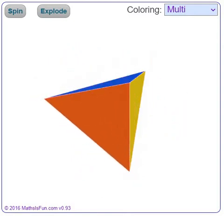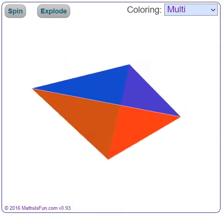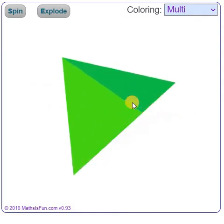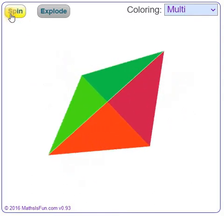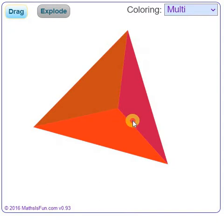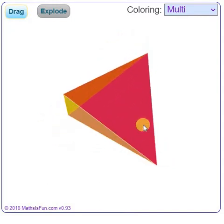When you hit the link, you will arrive at the spinning tetrahedron. To make it stop spinning, hit the spin button. Now we can drag and explore it.